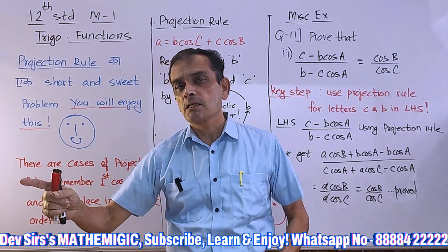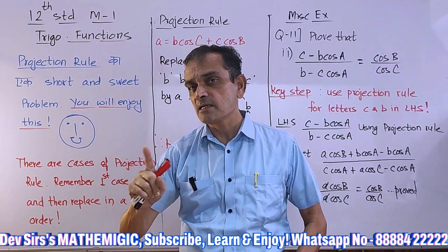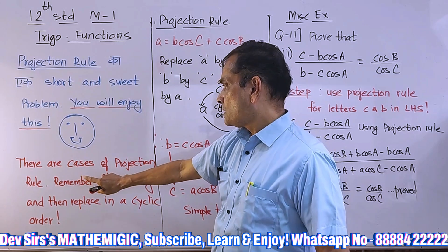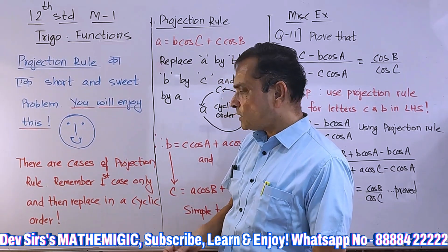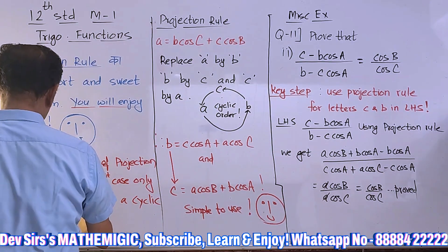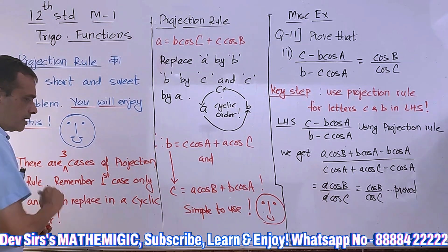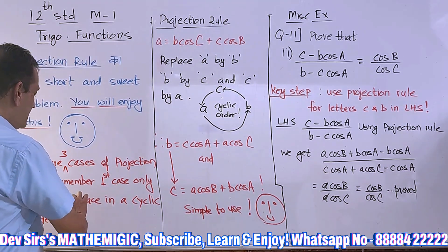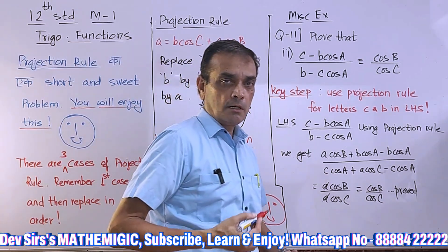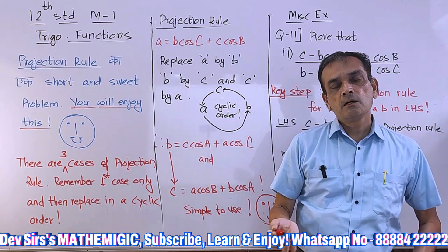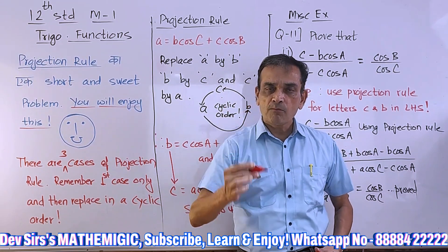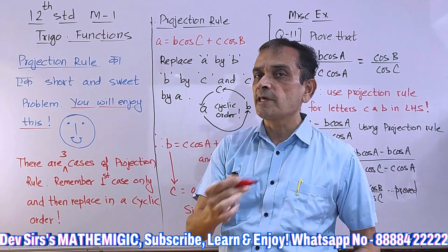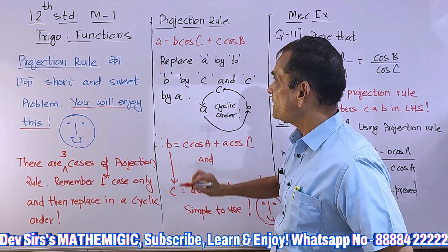This problem can be solved by two ways — I'll explain which ways are there, and you can select any one method. There are three cases of projection rule. Remember the first case only, and then replace in a cyclic order. After that it becomes easy.